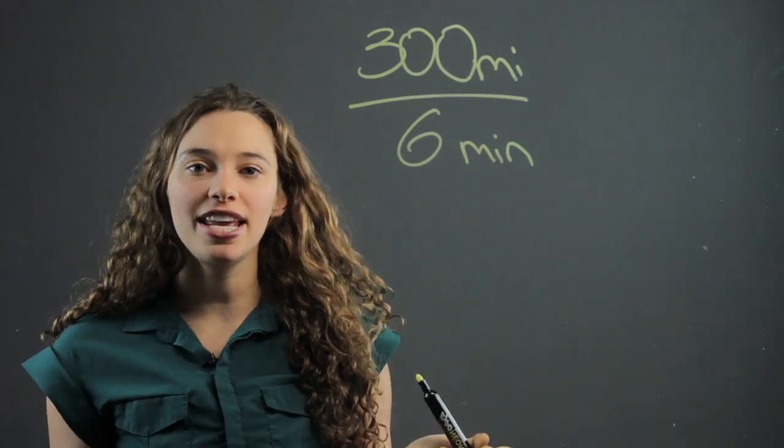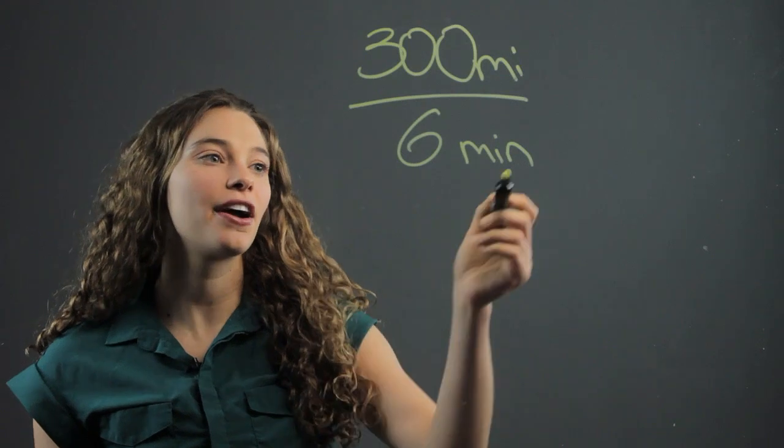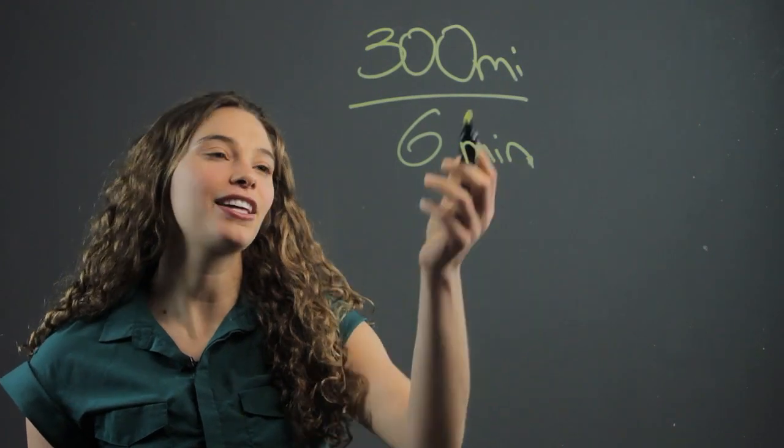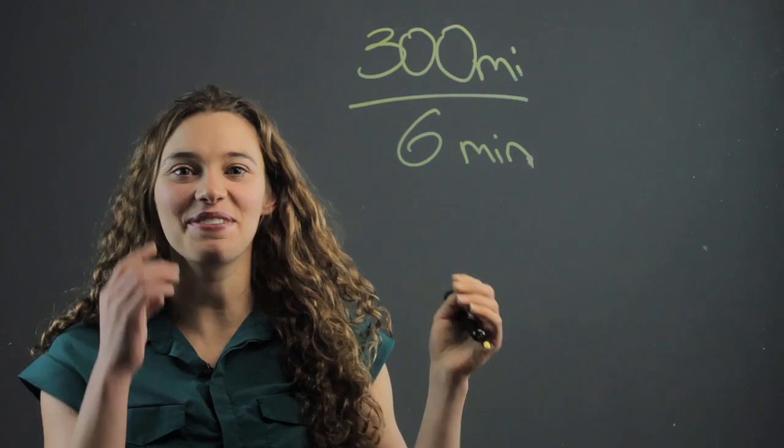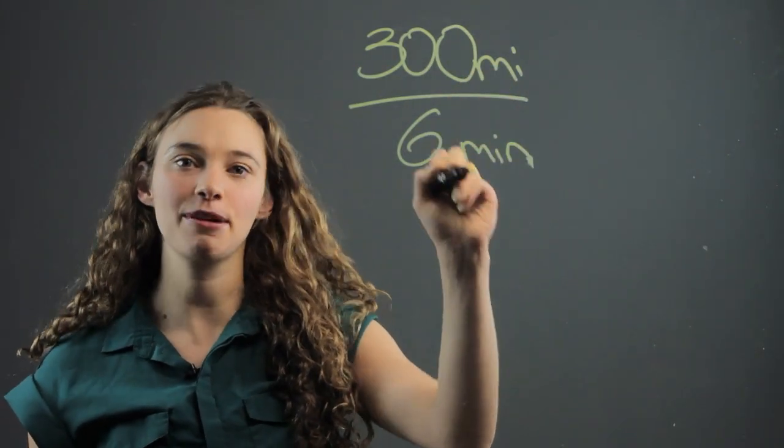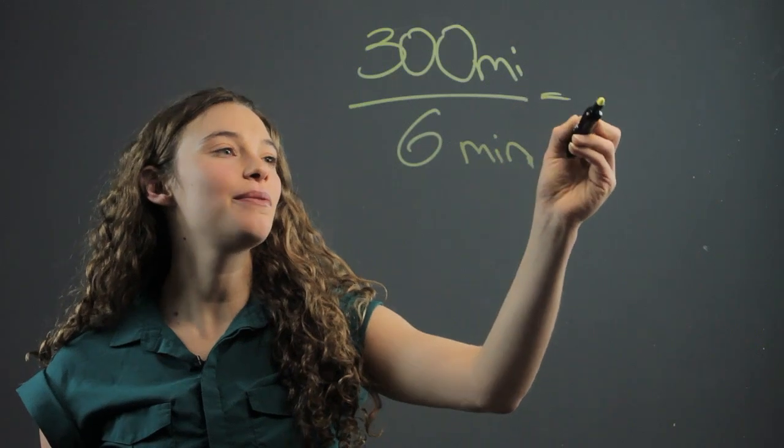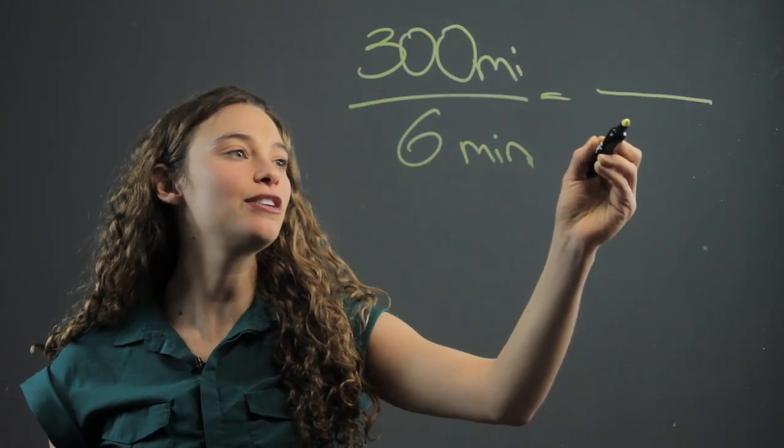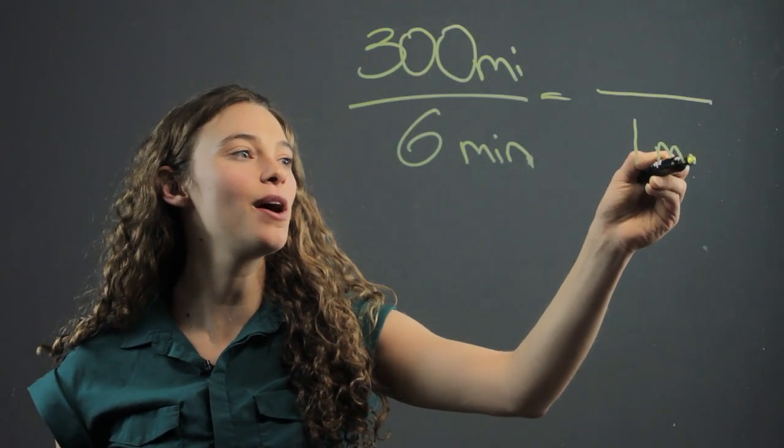So what is the train's speed per minute? Well, that's really fast, but okay, it's a very super fast train. We want to get it into single units - miles per minute. You want to know the train's speed in one minute.